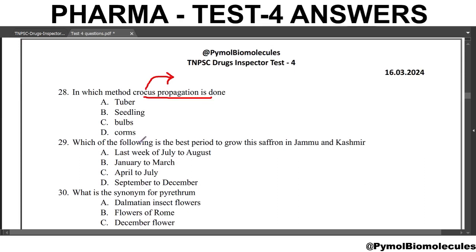Next question: which is the best period to grow saffron in Jammu and Kashmir? The answer is the last week of July to August. The saffron flower produces only three stigmas, and collection is done only one week each year.